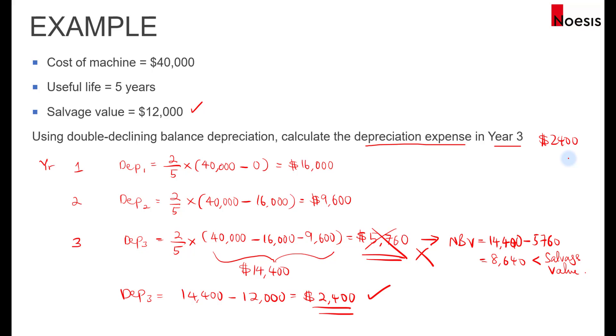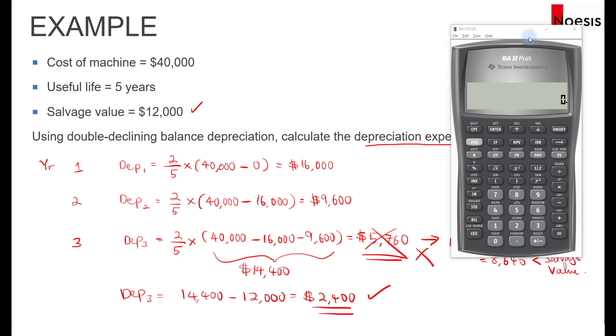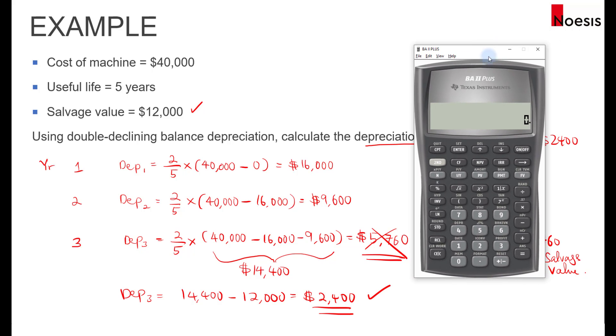There's a quick hack here that you can use with the financial calculator. In your Texas BA2 financial calculator, there is a depreciation function. What you need to do here is press 2nd and followed by 4. That gives you access to the depreciation worksheet.